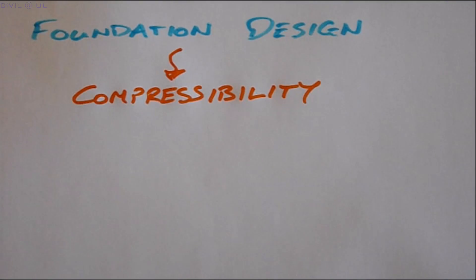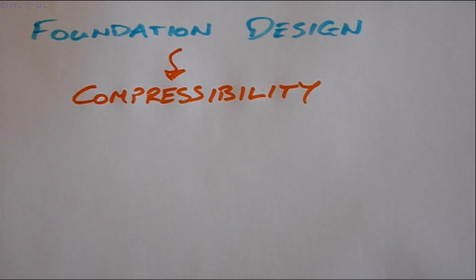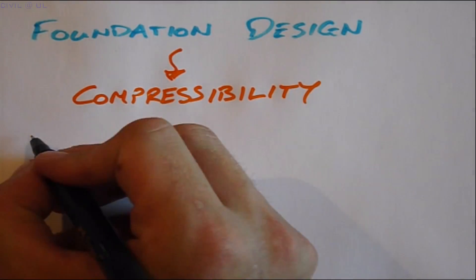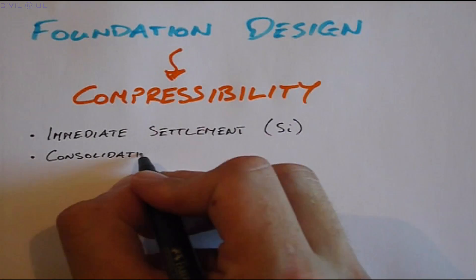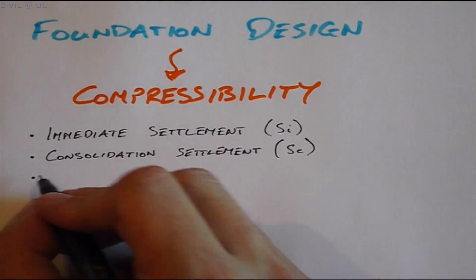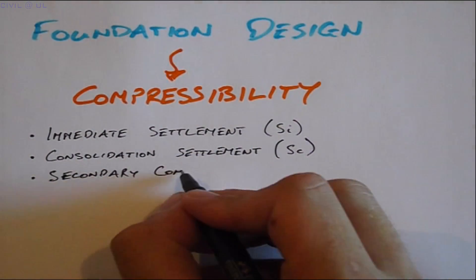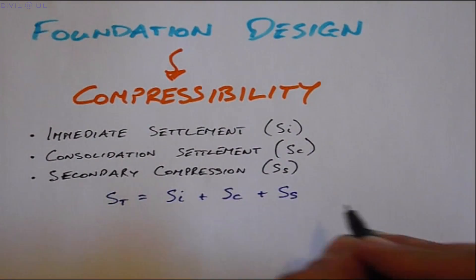A detailed study of soil compressibility shows there are three components that contribute to the overall ground movement. These are the immediate settlement, the consolidation settlement, and secondary compression, and together these give the total settlement.